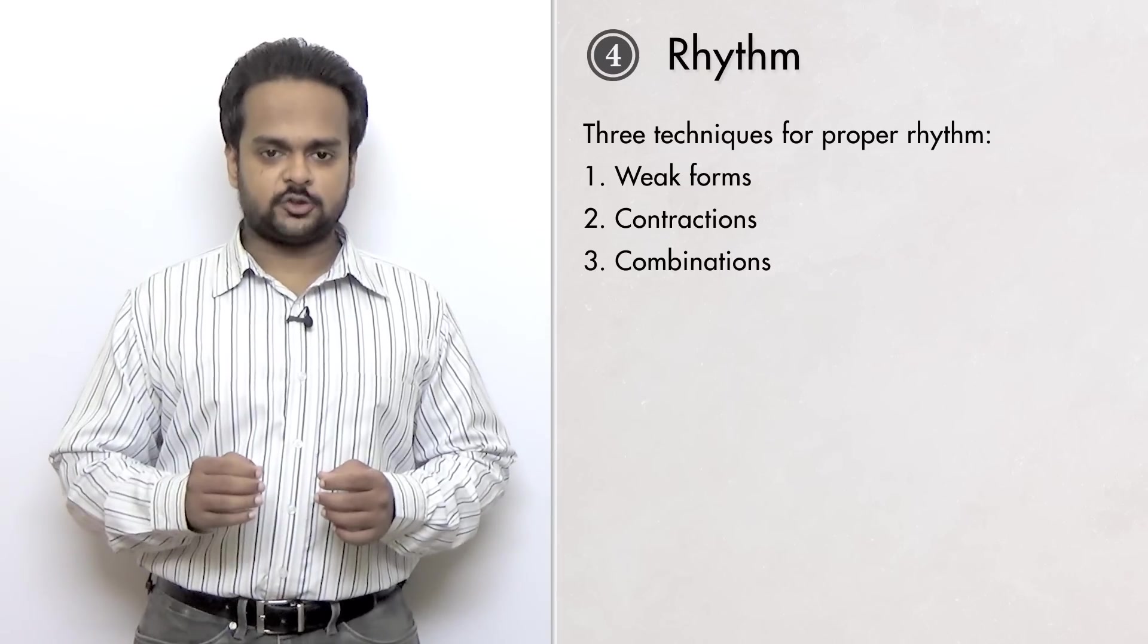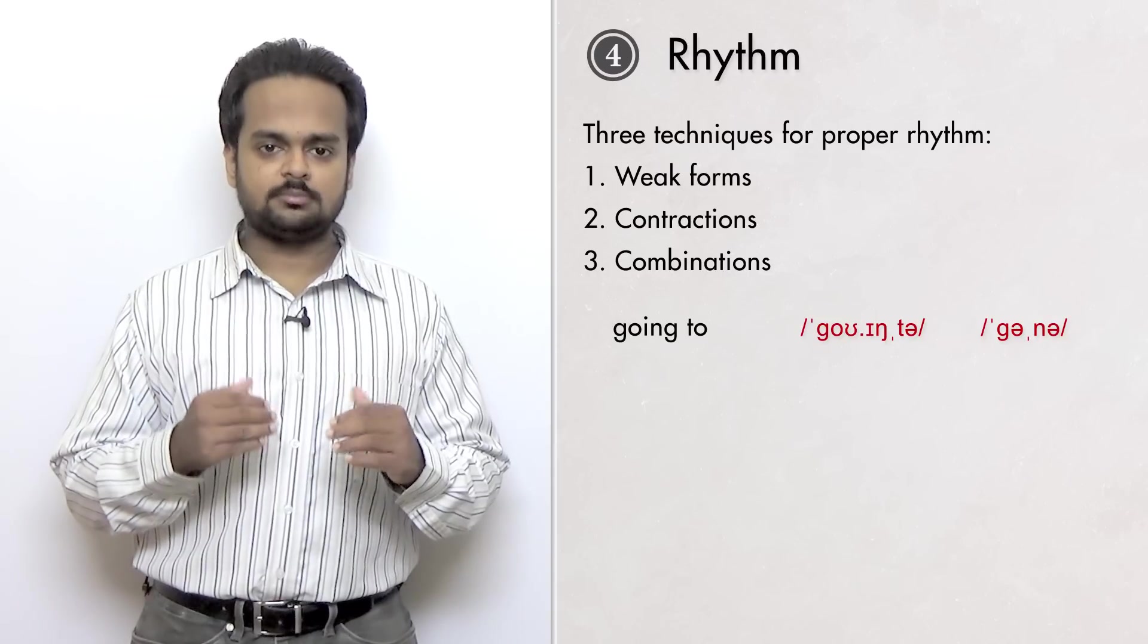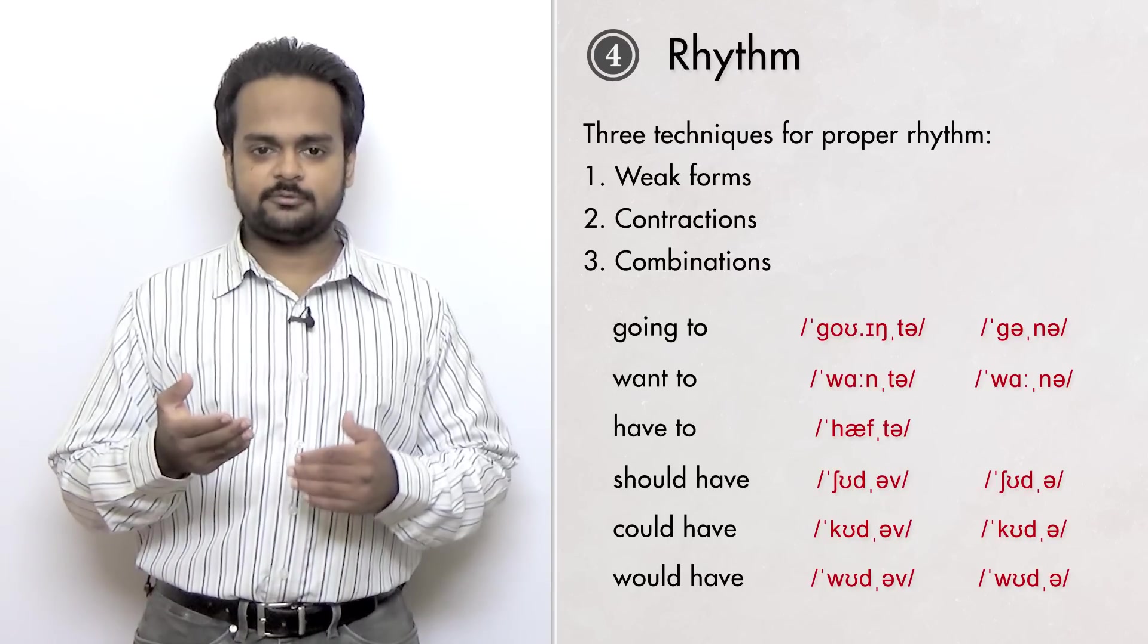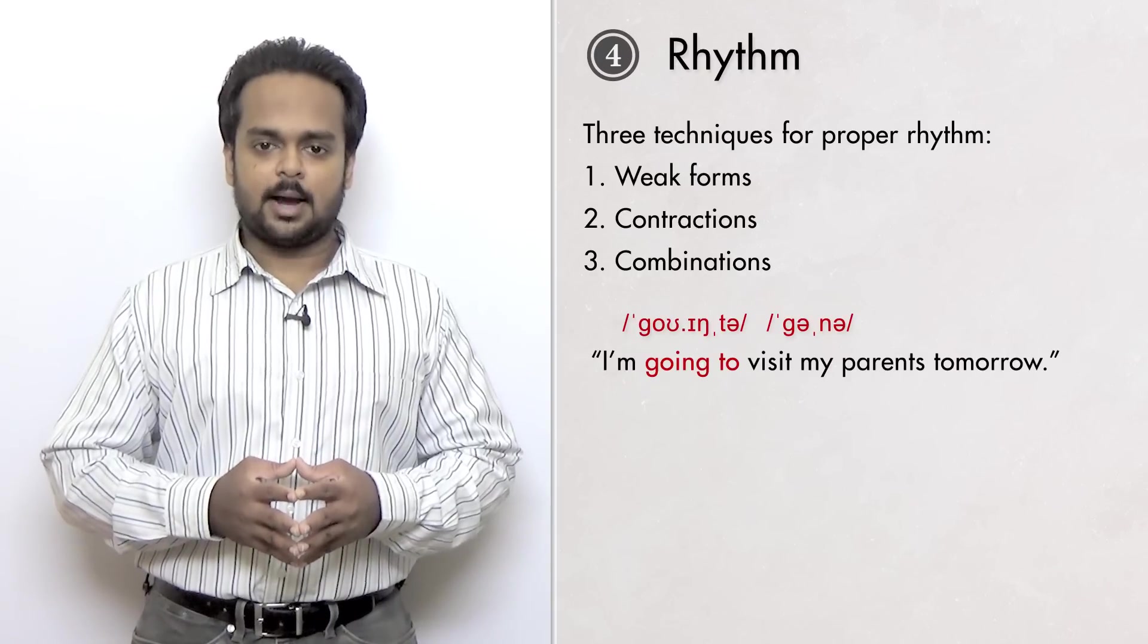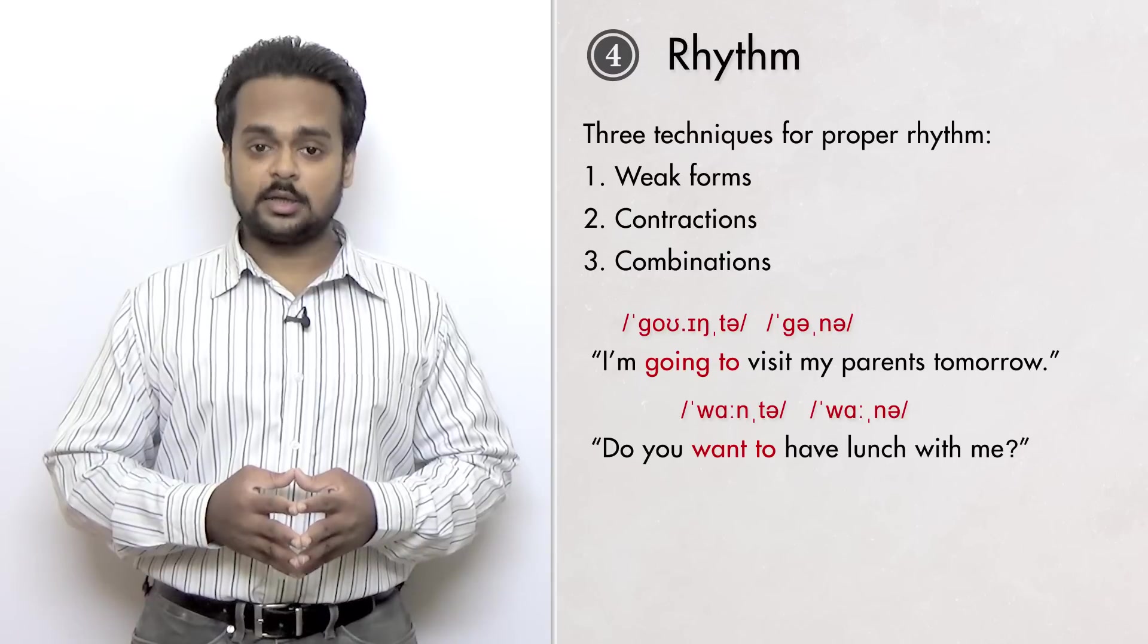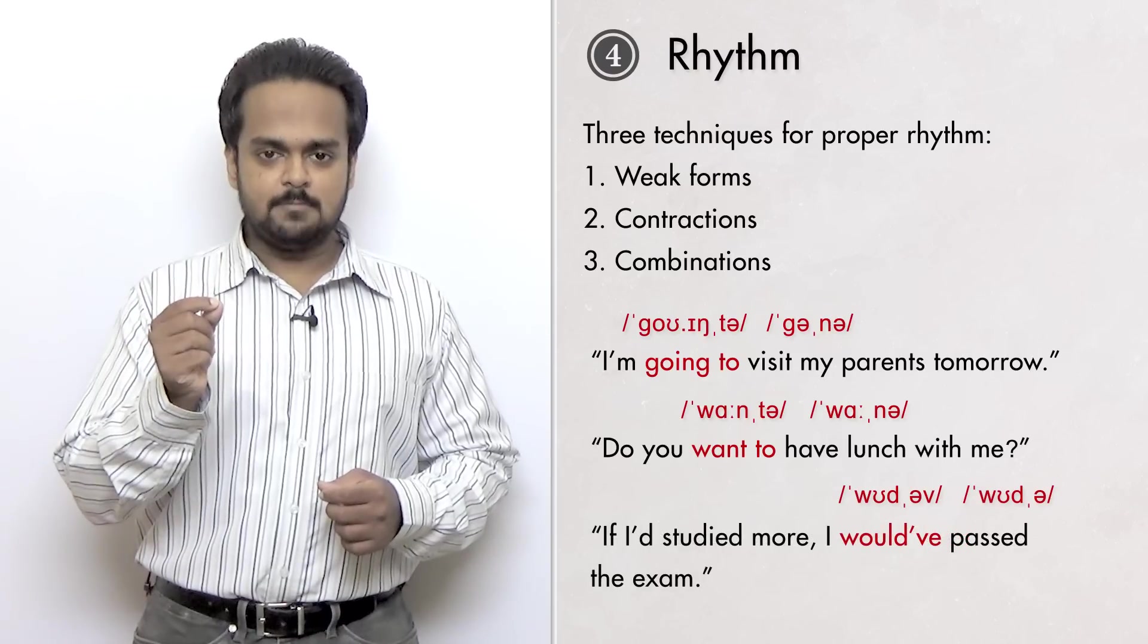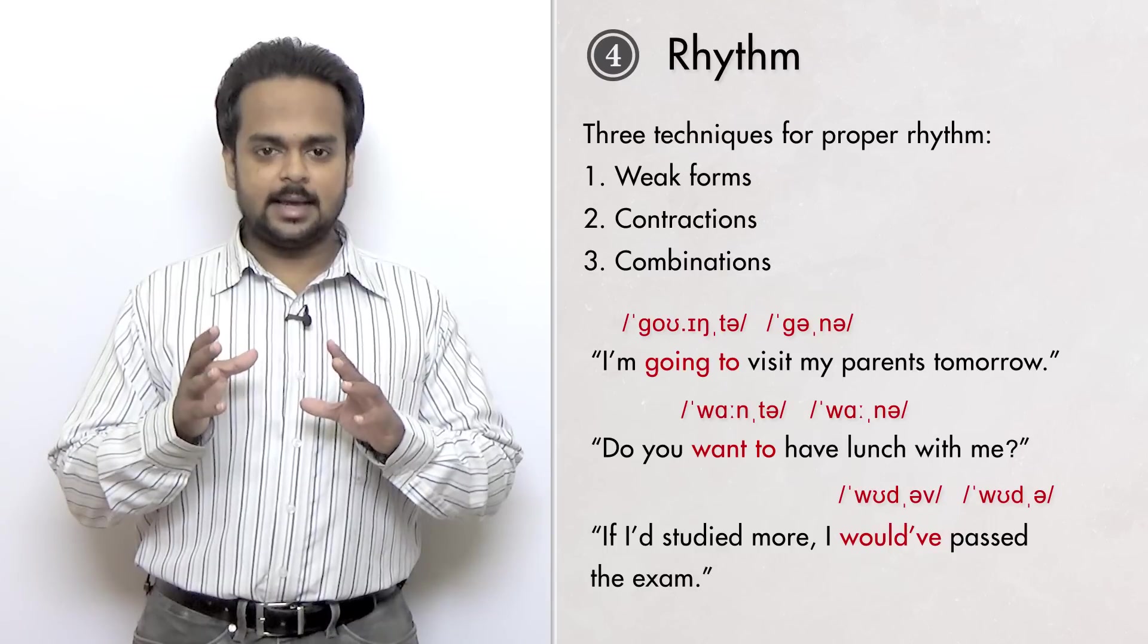The third technique is combinations. That is to crush and combine grammar words together. For example, the phrase going to often becomes going to or even gonna in informal speech. I'm sure you've also heard want to or wanna and hafta. The phrases should have, could have, and would have become should've, could've, and would've. Or even shoulda, coulda, and woulda. For example, I'm going to visit my parents tomorrow. Or I'm gonna visit my parents tomorrow. Do you wanna have lunch with me? Notice I said do you wanna. If I had studied more, I would've passed the exam. We can contract I had to I'd and would've to woulda. If I'd studied more, I would've passed the exam. There are many more weak forms, contractions, and combinations. You should study and practice them in your own time.